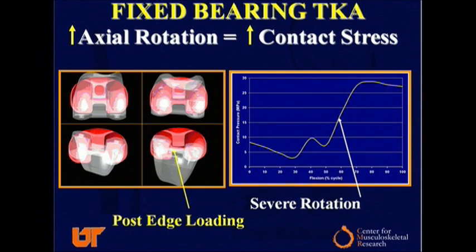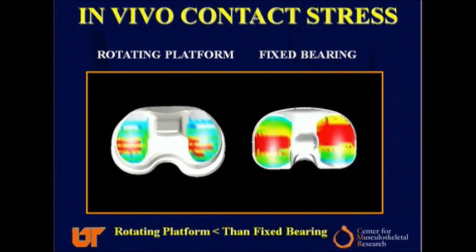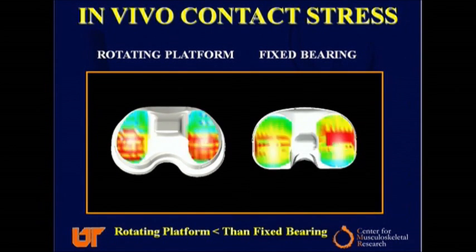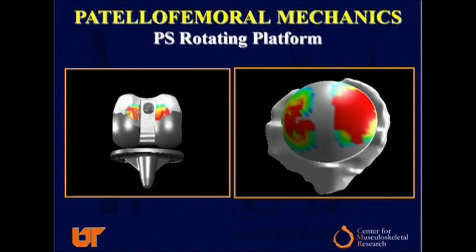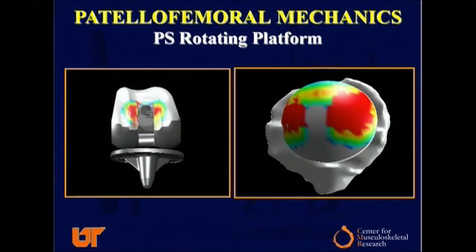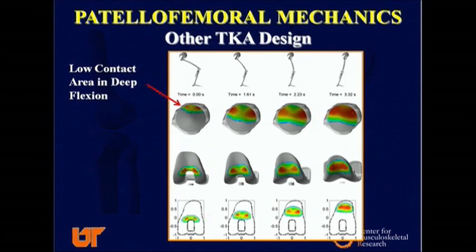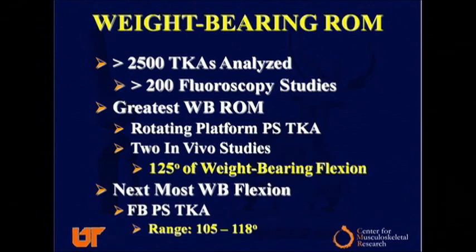When you have significant axial rotation, you lose the maximum contact area, and the contact stresses are significantly greater for the fixed bearing TKA. Regarding patellofemoral mechanics, we did our analysis initially on the normal knee to get in vivo contact area of the patella, which is significant throughout motion. We then analyzed the Sigma PS rotating platform knee and got good contact area all the way throughout flexion. Looking at other TKAs, there was lesser contact area in deep flexion. In our studies of 2,500 TKAs, the greatest amount of weight-bearing range of motion occurred in subjects with a rotating platform PS TKA.